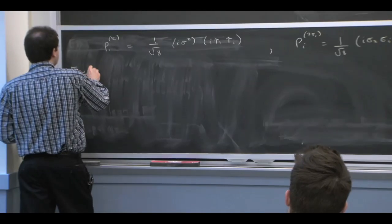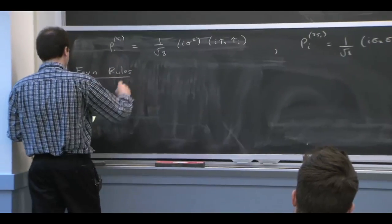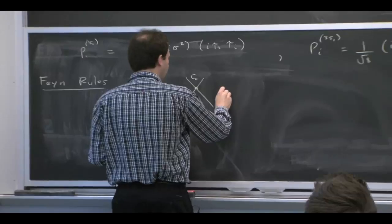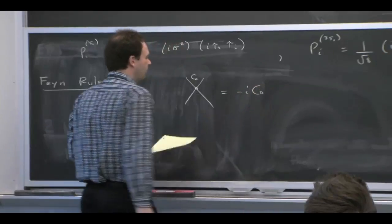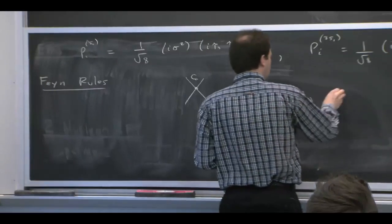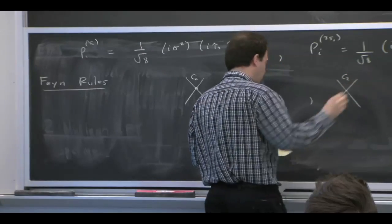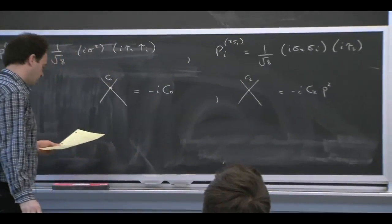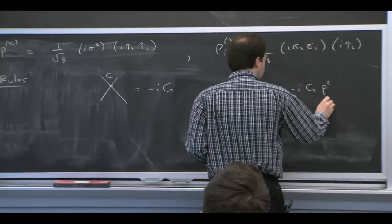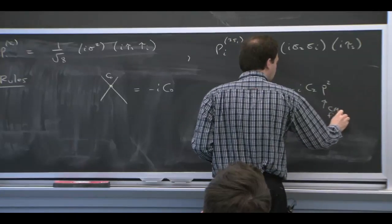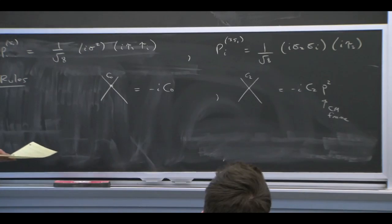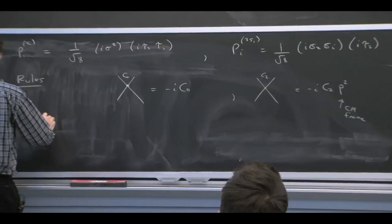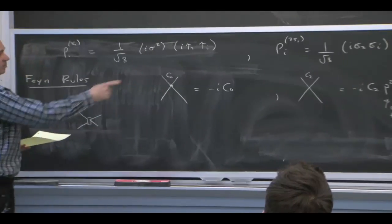So with that, with those conventions, our Feynman rules are particularly simple. If we just have a C0 in some channel, then the Feynman rule is just minus i C0. And if we have one of these higher C2 operators, in the center of mass frame, it's just minus i C2 p squared. In the center of mass frame, that's the center of mass momentum. And remember, in the center of mass frame, p squared is equal to p prime squared.